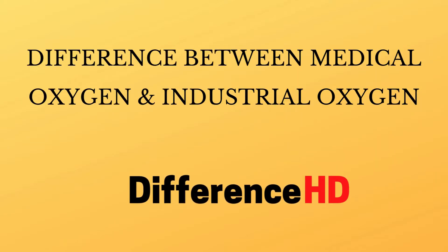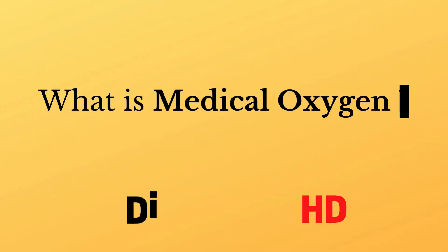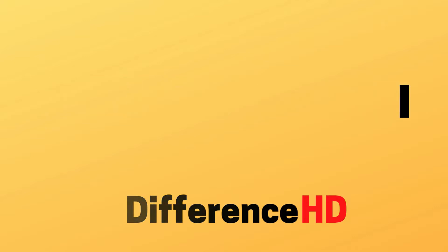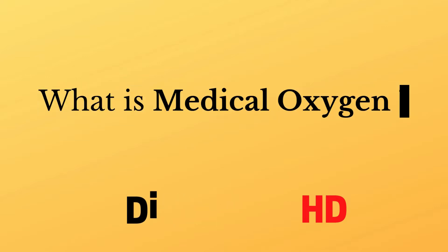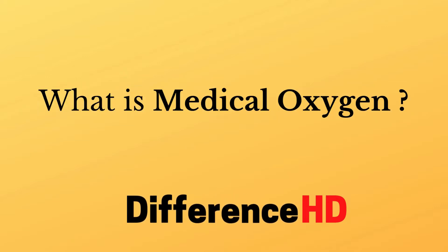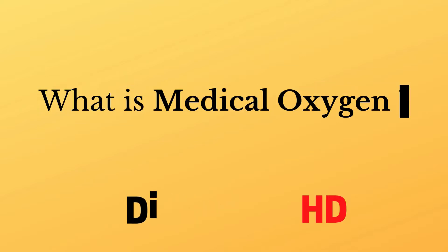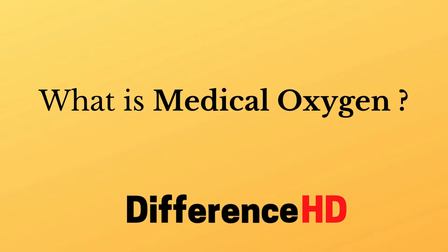Difference between medical oxygen and industrial oxygen. Medical oxygen is the oxygen that is utilized in the treatment of patients. We use it to maintain an adequate supply of oxygen in our blood. Oxygen therapy is the use of oxygen as a medical treatment.